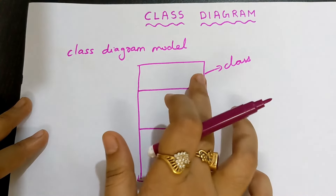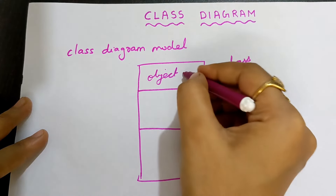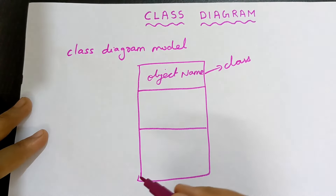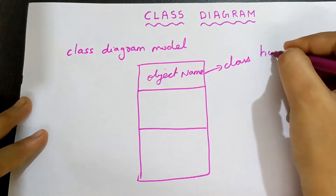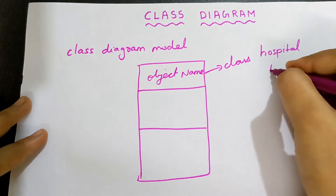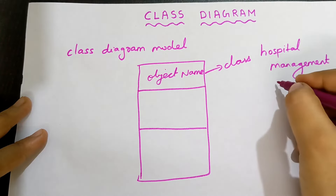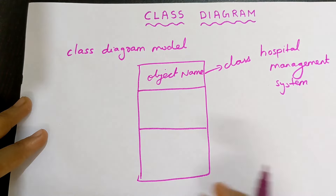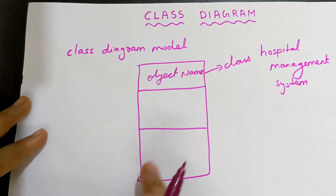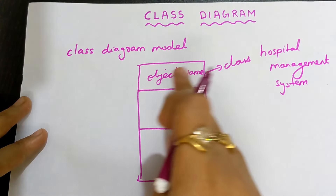Inside the first part, I have to write the object name. Object name is nothing but the object that belongs to the class. For example, if the topic is hospital management system and you are asked to draw a class diagram, you need to first create a class and divide it into three. So for this hospital management system, what can be the object?